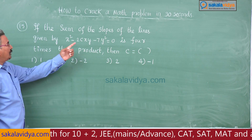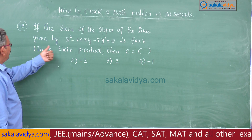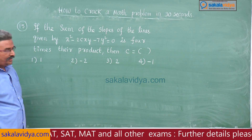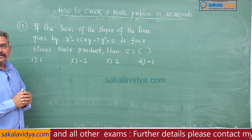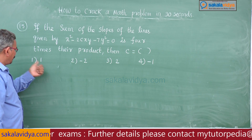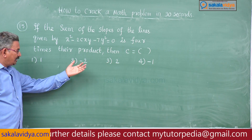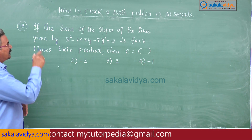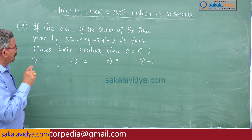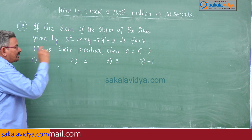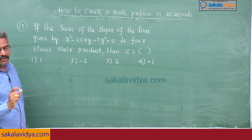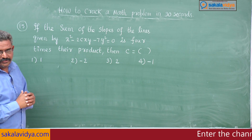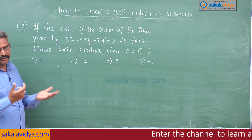15th problem: If the sum of the slopes of the lines given by x² - 2cxy - 7y² = 0 is 4 times their product, then c equals — first option 1, second option -2, third option 2, fourth option -1. The keyword: m1 + m2 = 4·(m1·m2). We need to find m1+m2 and m1·m2 and substitute.